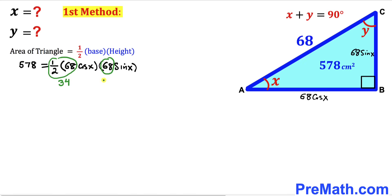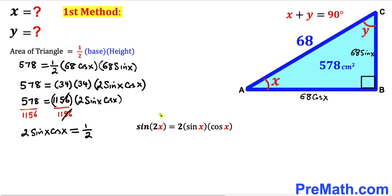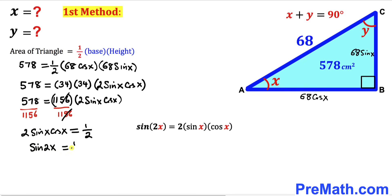Dividing both sides by 1156, this simplifies so that 2·sin(x)·cos(x) equals one-half. Now let's recall the famous trigonometric identity: sine of 2x equals 2·sin(x)·cos(x). Applying this identity to the left-hand side, we get sine of 2x equals one-half.